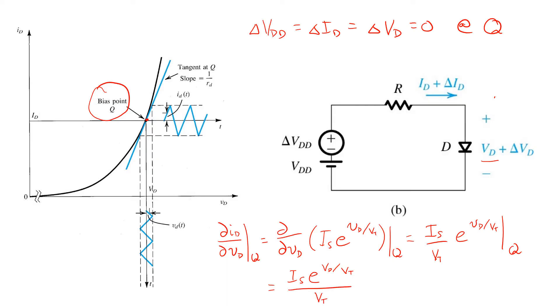Now you'll note the numerator here is nothing more than the uppercase ID. That is the diode current evaluated at the bias point Q. So the slope of the tangent at Q is given by this relatively simple expression.